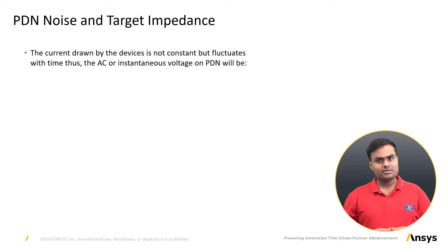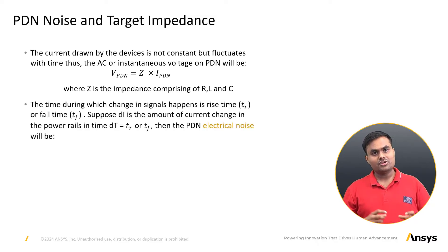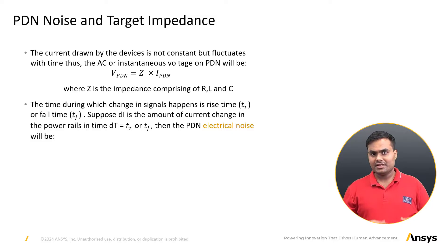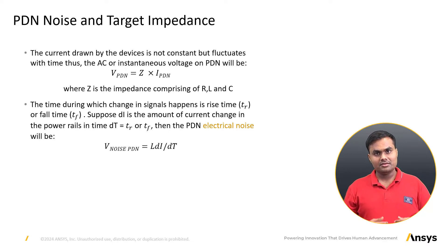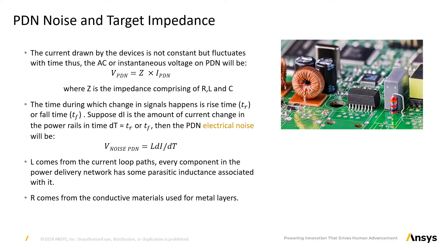The current drawn by devices is not constant but fluctuates with time, so the AC voltage on the PDN will be: V_PDN = Z_PDN × I_PDN. When digital signals change in devices, the change occurs in a short duration of time measured by rise time (tr) or fall time (tf). In high-speed circuits this is on the order of picoseconds. If ΔI is the amount of current change on the power rail during signal transitions in time Δt, then the PDN electrical noise is given by: V_noise_PDN = L × (dI/dt), where L comes from current loop paths. Every component in the power delivery network has some parasitic inductance associated with it. Target impedance refers to the desired impedance limit of the network.